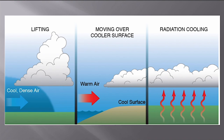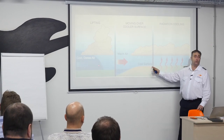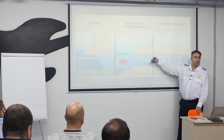Cool dense air — lifting — warm air moving over a cool surface — radiation cooling. These are three different ways in which visible moisture could become a challenge. It doesn't necessarily mean it will be a challenge. If the temperature and dew point are close, that could result in something soon changing. Ground fog could come from a wide variety of reasons. Cool dense air moving will typically move any moisture out of the way. If I take warm moist air and move it over a cool surface, I could 100% get fog or low clouds.